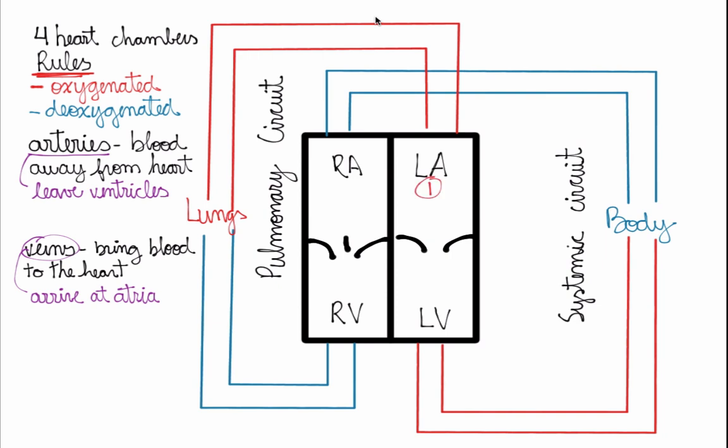Now we can give names to the different parts and create a numerical order explaining blood flow through the heart. Starting at number one, the left atrium pumps blood into number two, the left ventricle. From the left ventricle we go to number three — this takes blood away from the heart, so it's an artery called the aorta, the most important artery in your body.